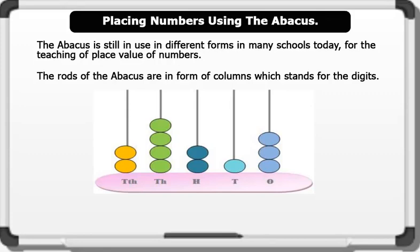Let's count together. 2 in the tens of thousands column. 4 in the thousands column. 2 in the hundreds column. 1 in the tens column. 3 in the ones column. This gives us 24,213.